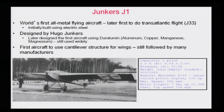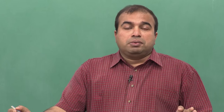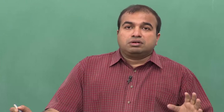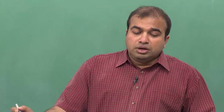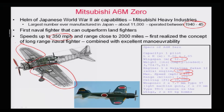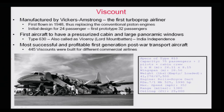Now we will talk about another important aircraft. Up to this point, people were making aircraft using wood and cloth. This is the aircraft that first converted from wood and cloth to metal — the Junkers aircraft. The engine here, instead of a pusher configuration, is actually in the front, like a puller engine.